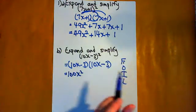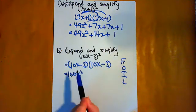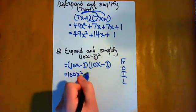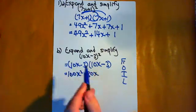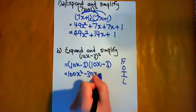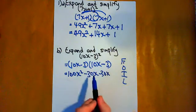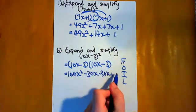Now we have O for Outside. The outside terms are 10x and -3, which gives us -30x. Inside, the inner pair, is also -30x. And then the Last term from each bracket, so that's plus 9.